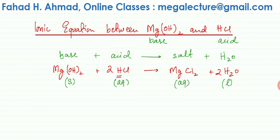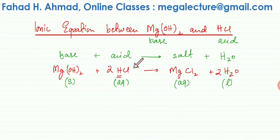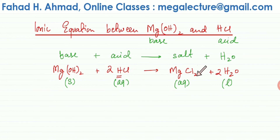Now moving to Step 2. Remember: whenever acids, bases, and salts are aqueous, they dissociate. For example, HCl is aqueous — if you mix it in water it separates into its ions. The same happens with magnesium chloride: if you mix it in water, it dissociates into its ions.